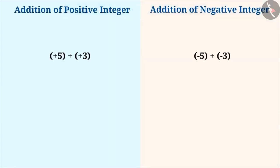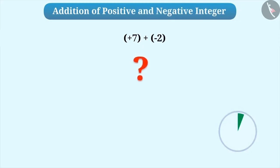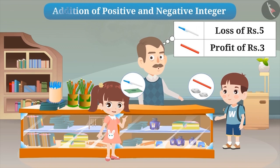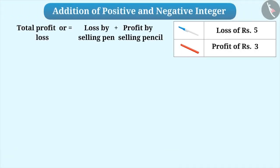With the help of these two examples, you must have understood that if the signs of integers are the same, then they can be added without signs and the result is shown with the sign of their numbers. Now if we have to add a positive and a negative integer, how shall we do this? Let us suppose a shopkeeper faces a loss of Rs.5 by selling a pen and a profit of Rs.3 by selling a pencil. Now if we have to find out how much profit or loss the shopkeeper made, then we need to add them. This means total profit or loss is equal to minus 5 plus plus 3.